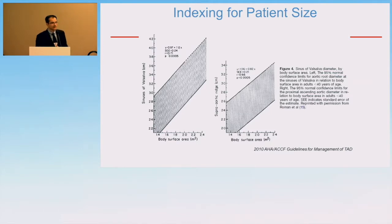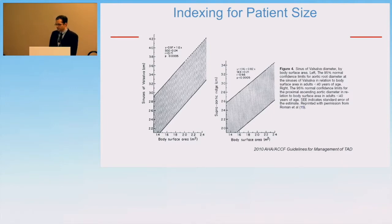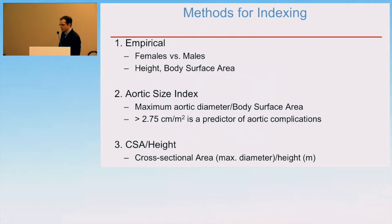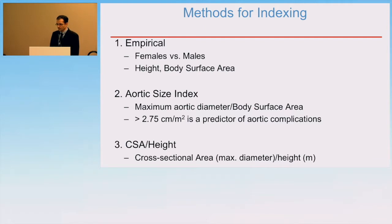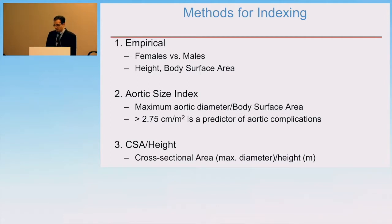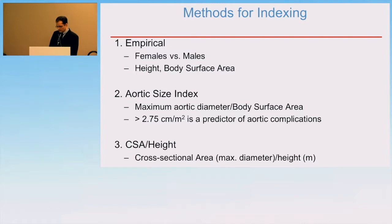There are some common sense elements we all use in daily practice, one of which is indexing for patient size. As body surface area increases, the normal range of aortic diameters also increases. Many of us adjust for patient size empirically, using different thresholds for females versus males, or taking into account height and body surface area. There are more formal methods of indexing for size, but unfortunately only a handful of studies look at indexed size as a predictor of aortic complications. A third method is cross-sectional area divided by height, used uncommonly, but a few publications suggest it is also a predictive parameter.